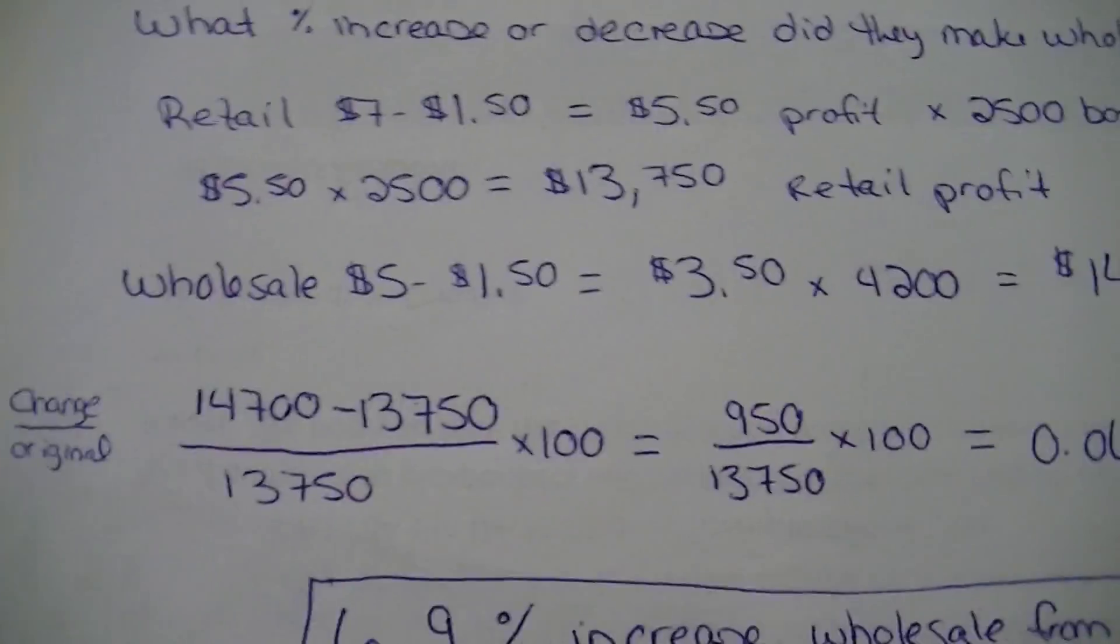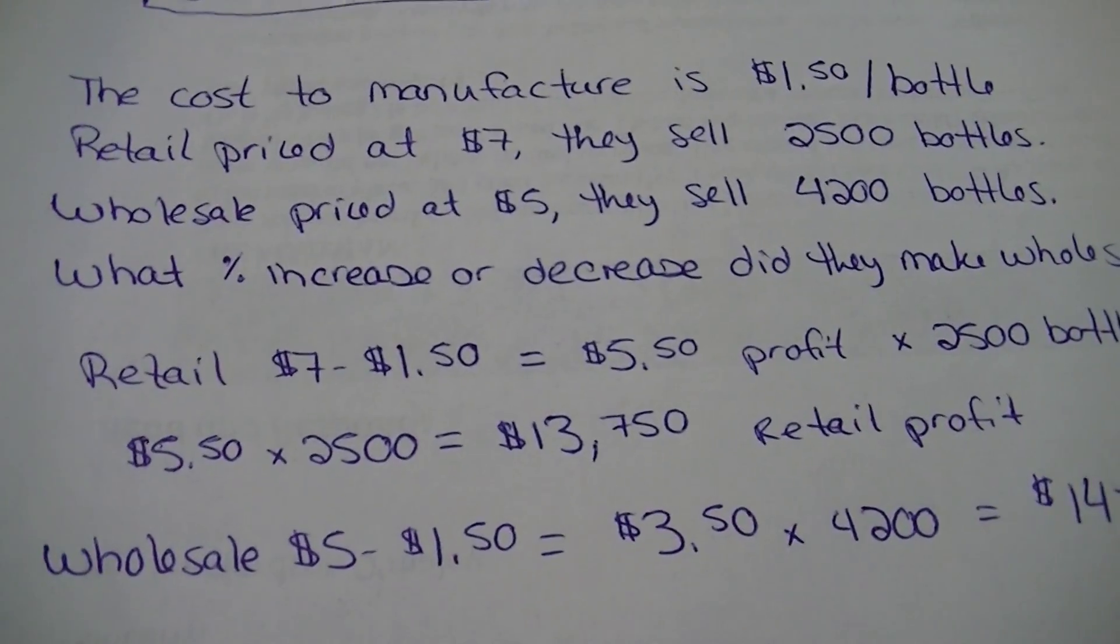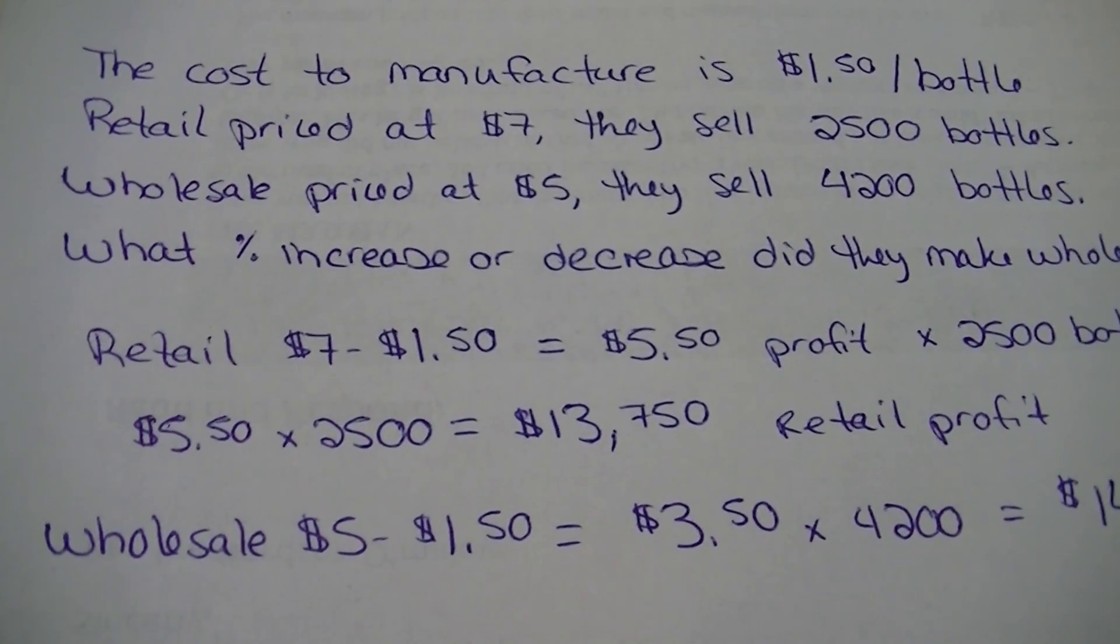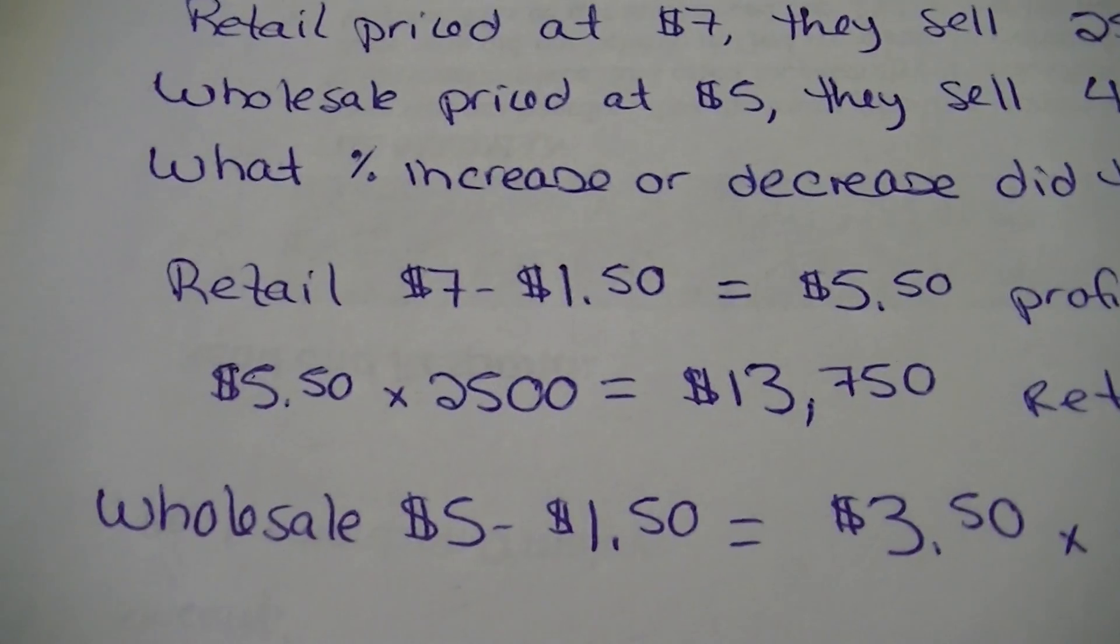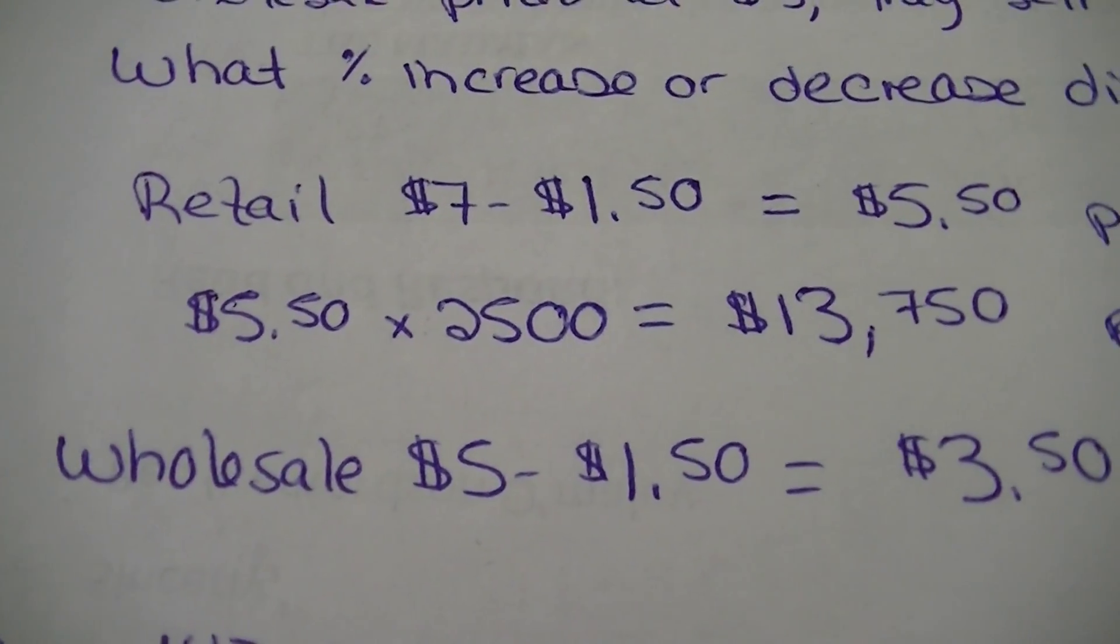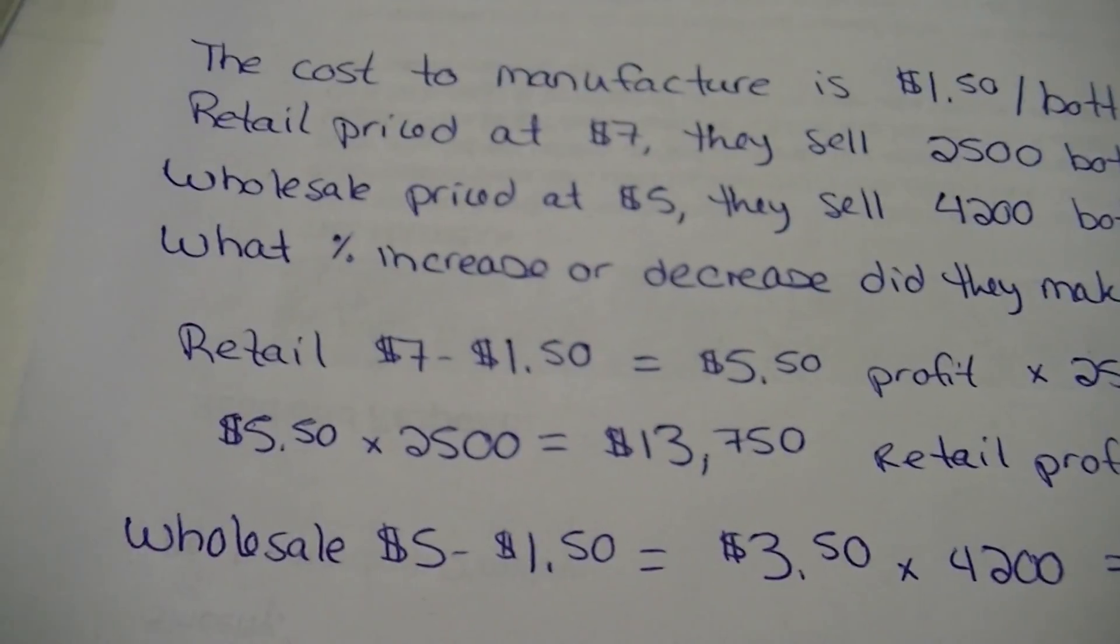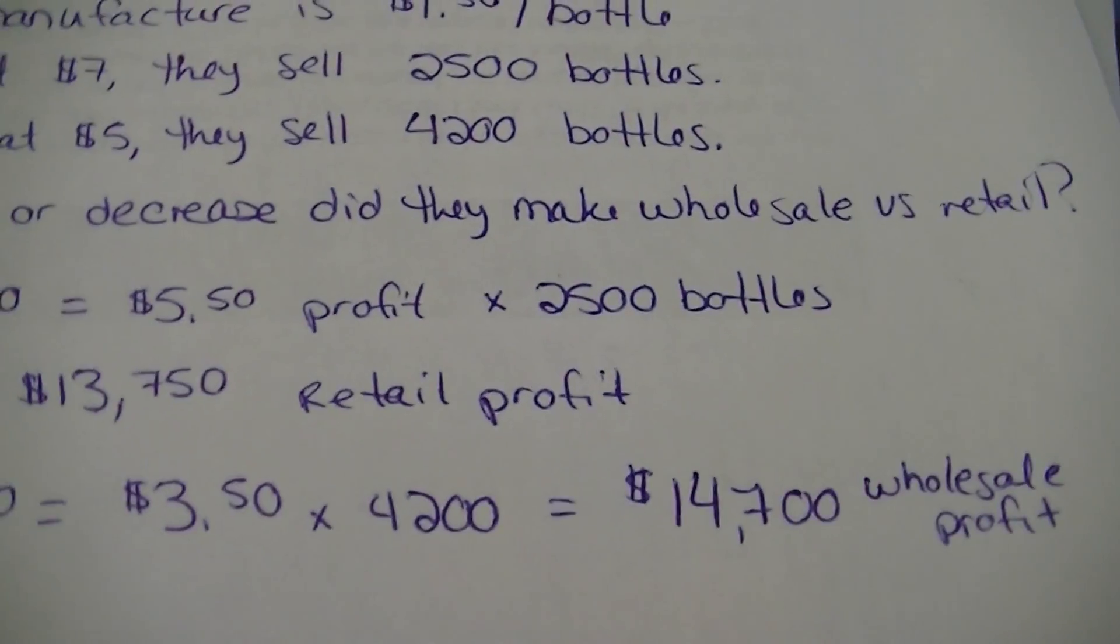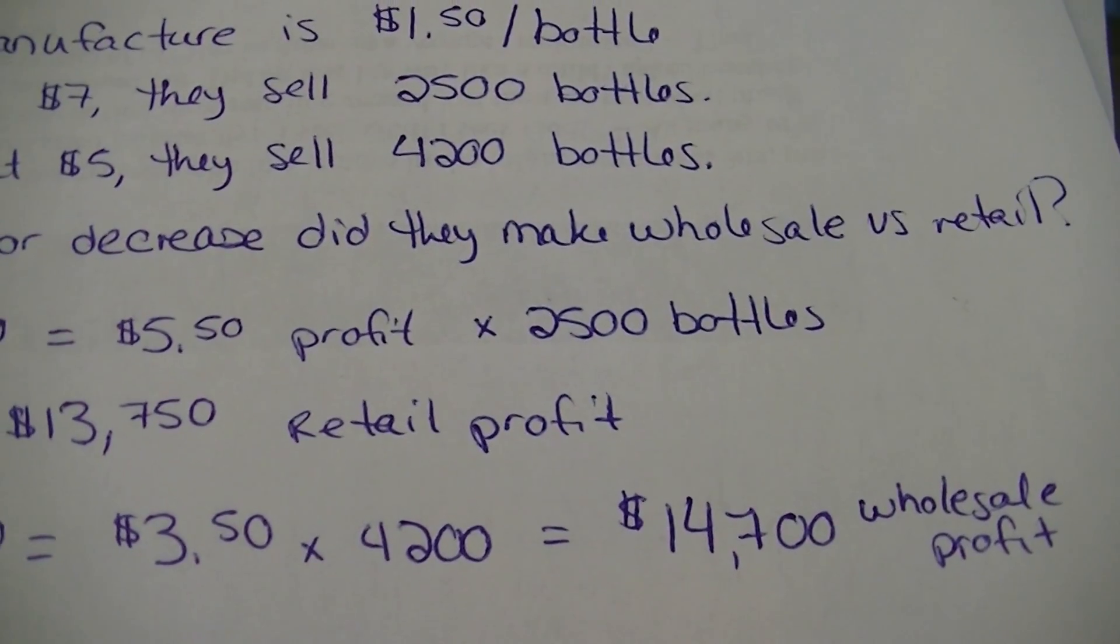Let's check out wholesale. Can it beat it? Well, wholesale, we said it was $5. And it still costs the same amount to make it, $1.50. So we've got to subtract that out. So we're looking at $3.50. That's our wholesale price, right? So we take that $5, subtract that $1.50, get that $3.50. Then we're going to multiply it by the number of bottles we sold, which in this case was 4,200. And multiply that out, we get a profit of $14,700.